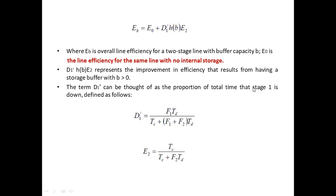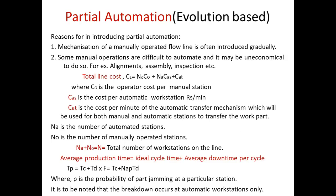D1 can be calculated using: e1' = f1·td / (tc + (f1 + f2)·td), where f1 and f2 are the frequencies of downtime for stage one and stage two respectively. Based on this equation you can determine the downtime proportion D1 and subsequently calculate the efficiency for both stage one and stage two.